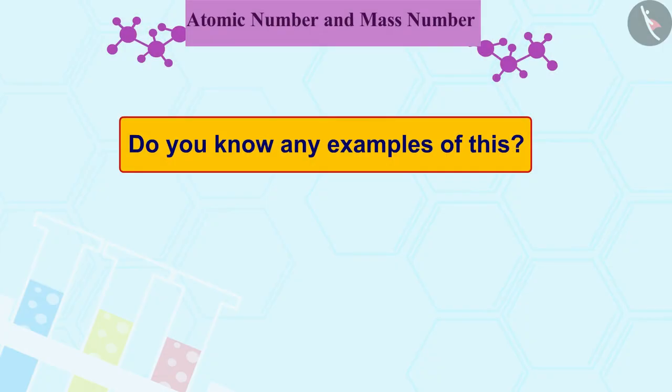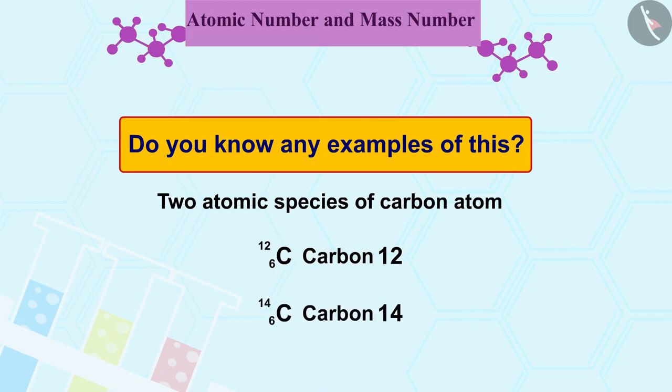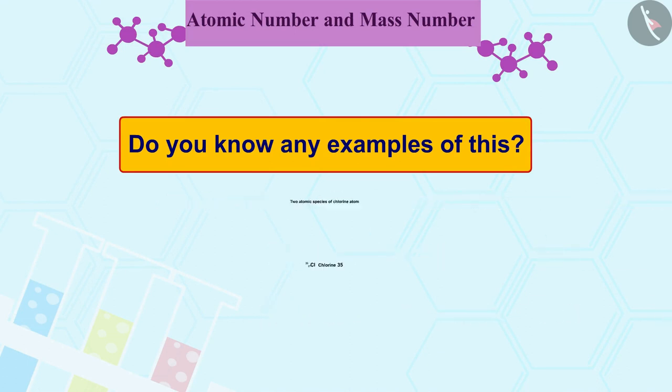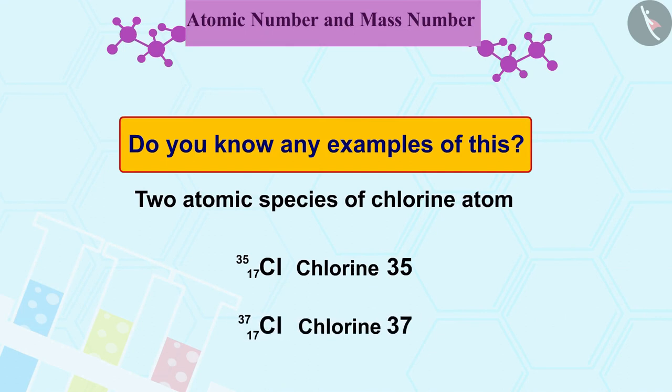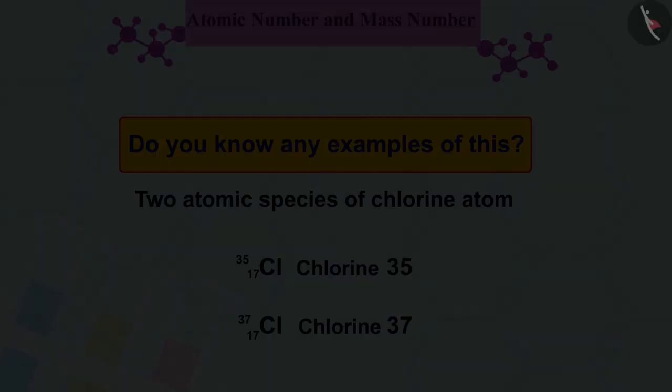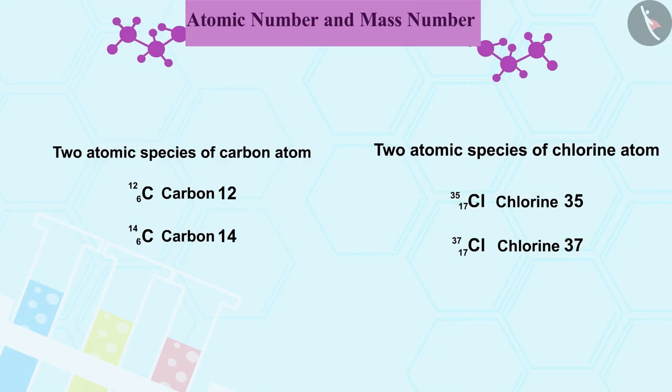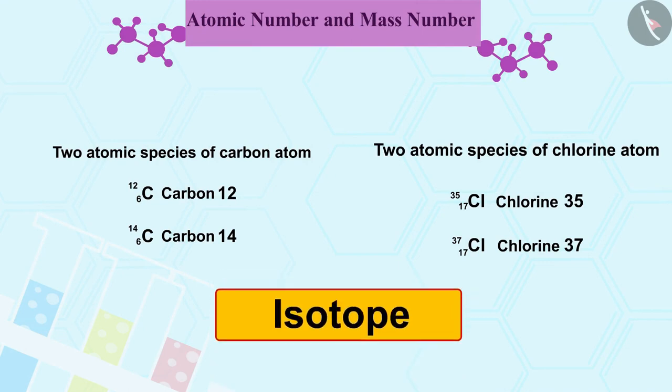Do you know any examples of this? Carbon-12 and carbon-14 and chlorine-35 and chlorine-37 are some other examples of this kind. These atomic species have a special name. We call them isotope.